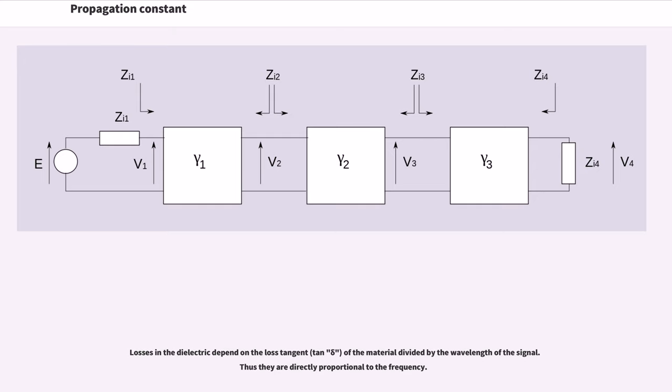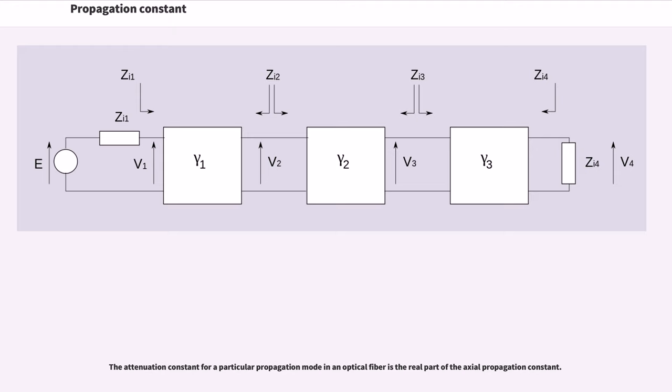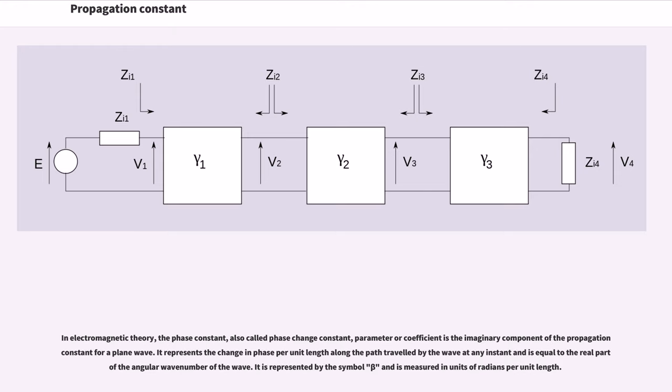Losses in the dielectric depend on the loss tangent of the material divided by the wavelength of the signal, thus they are directly proportional to the frequency. The attenuation constant for a particular propagation mode in an optical fiber is the real part of the axial propagation constant. In electromagnetic theory, the phase constant, also called phase change constant, parameter or coefficient is the imaginary component of the propagation constant for a plane wave. It represents the change in phase per unit length along the path traveled by the wave at any instant and is equal to the real part of the angular wave number of the wave. It is represented by the symbol beta and is measured in units of radians per unit length.